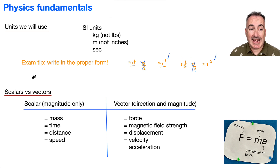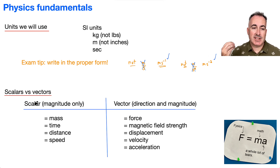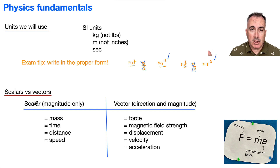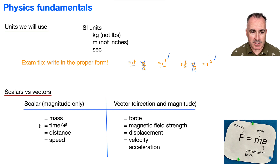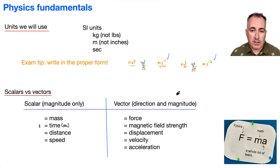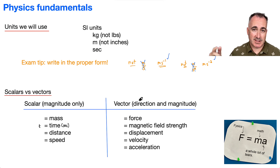Let's talk about scalars versus vectors. A scalar is a quantity that just has a magnitude — just a value. One of the simplest examples is time: t is time, measured in seconds. By contrast, a vector is something that has both direction and magnitude. So it's got the same thing as the scalar, except direction is important — something like east or north.